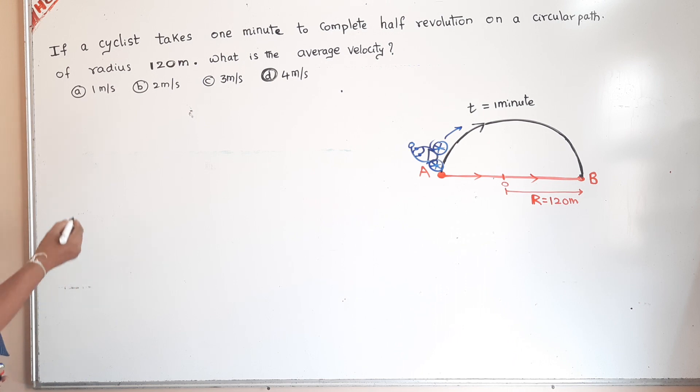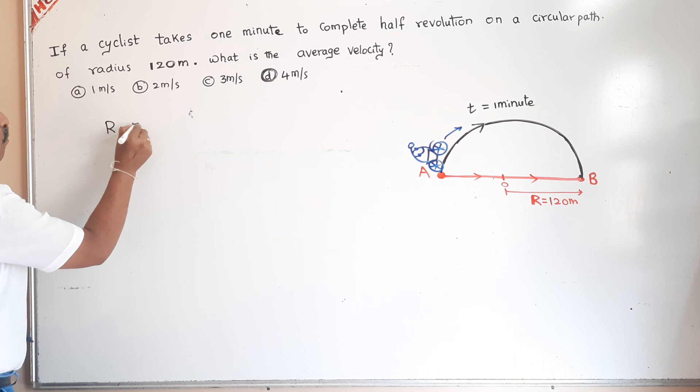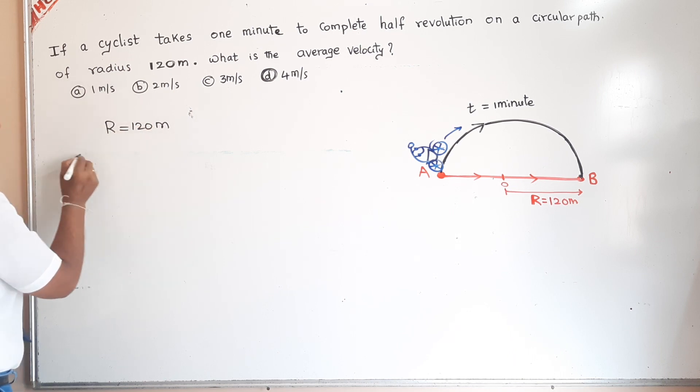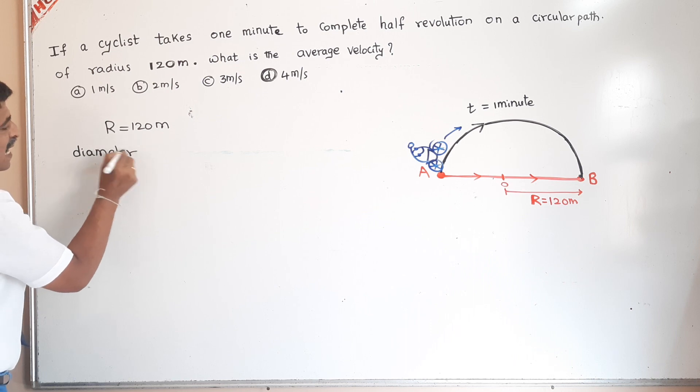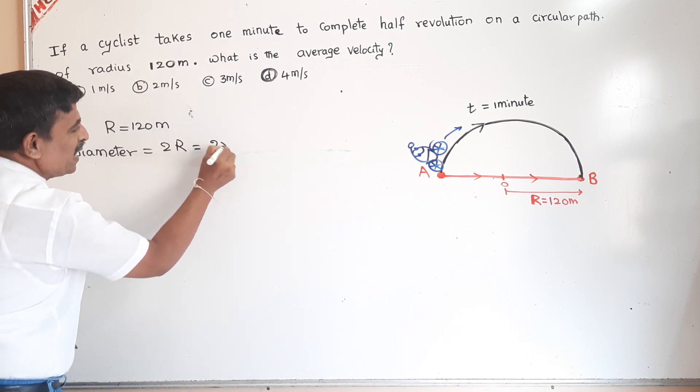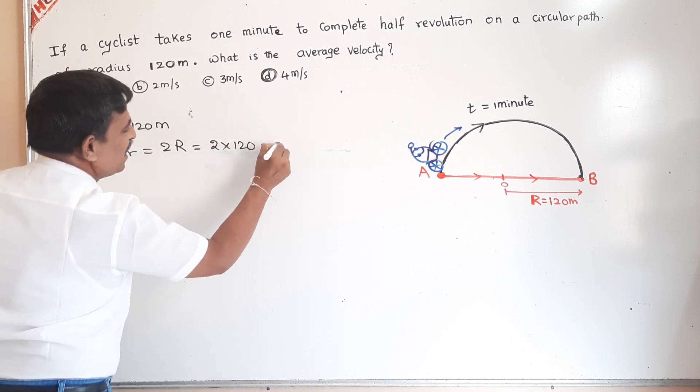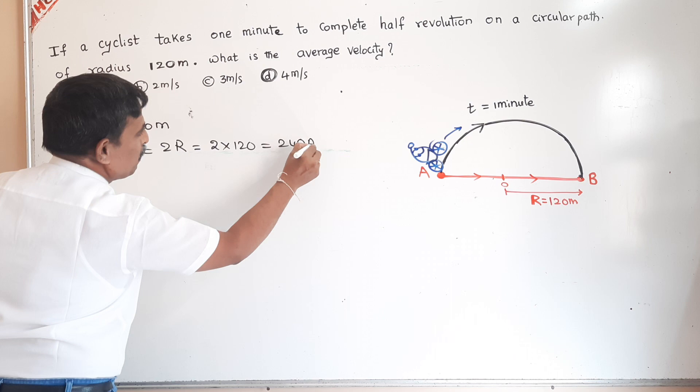Now first of all, please listen here. Radius is given as 120 meter. Diameter is equal to 2 times the radius, 2 into 120, that is equal to 240 meter.